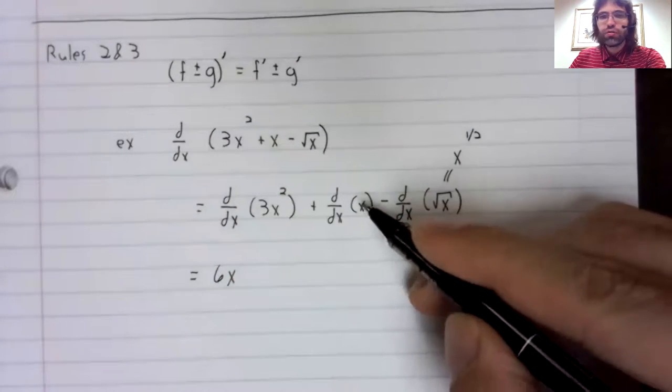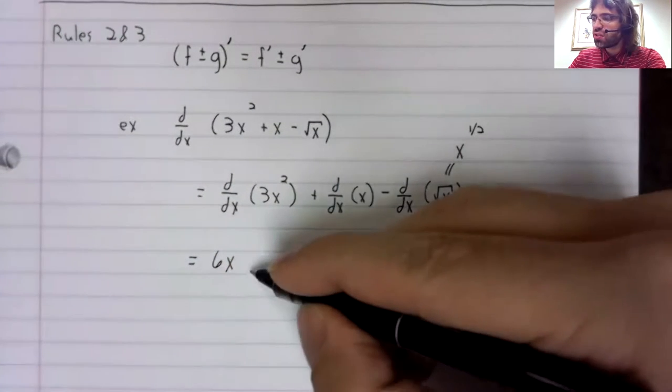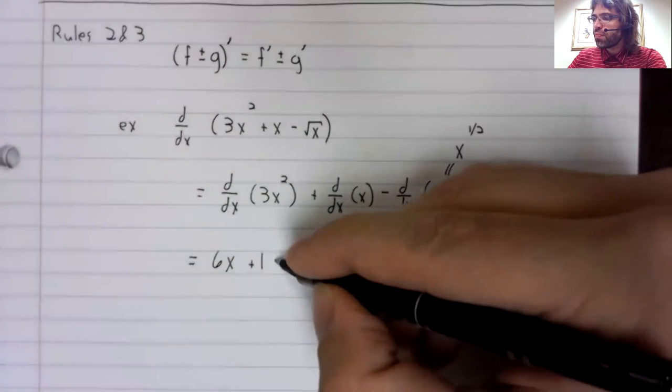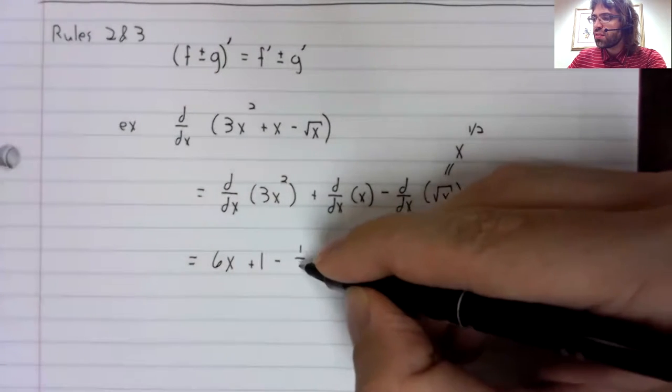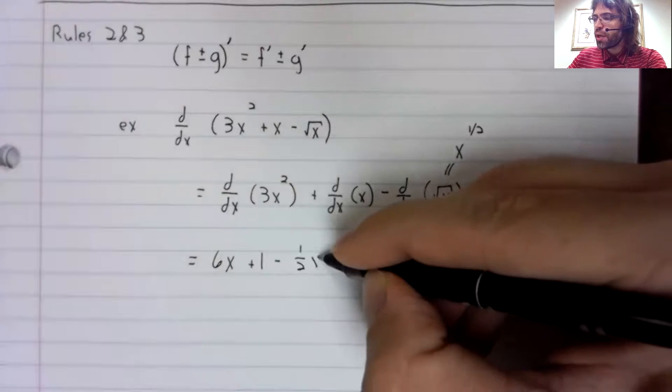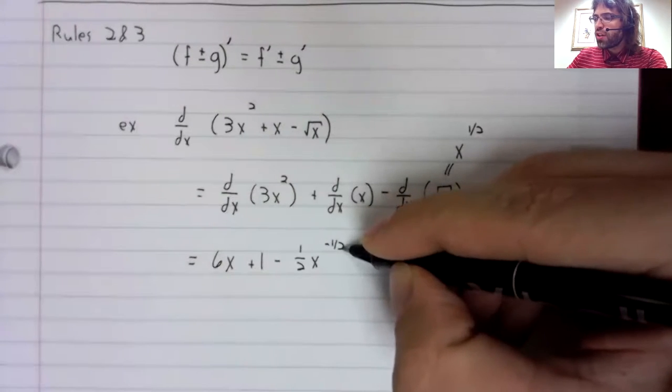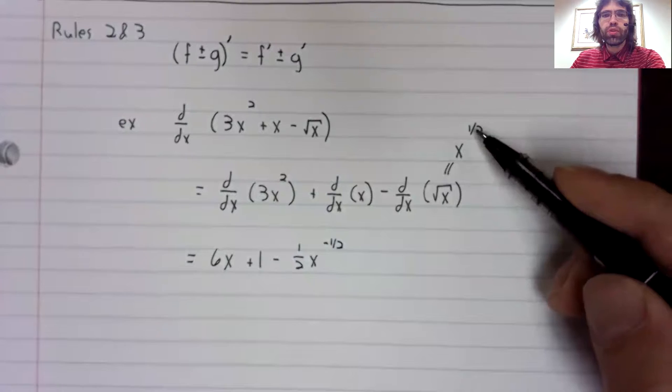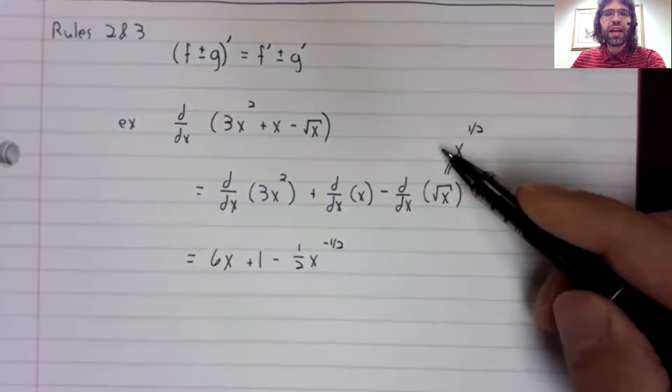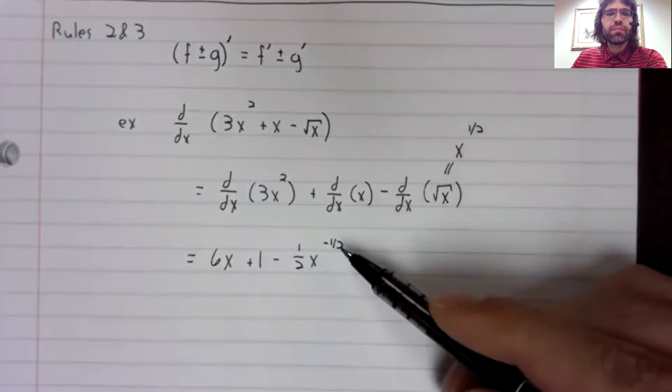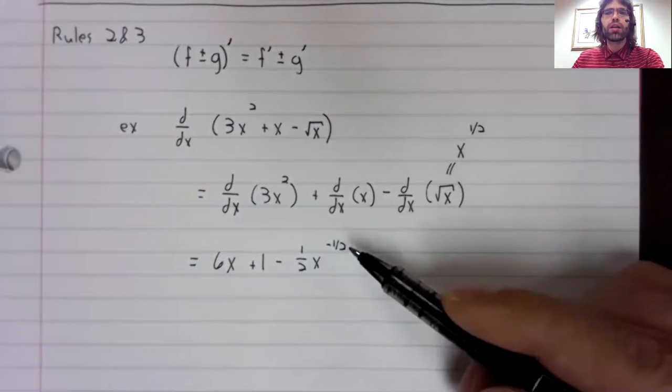The derivative of x is one, and here we're using the power rule - the one-half comes down, and then one-half minus one is negative one-half.